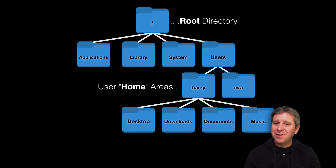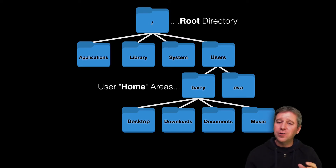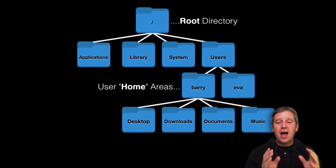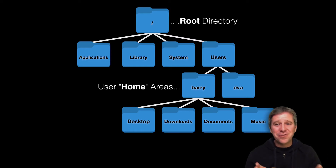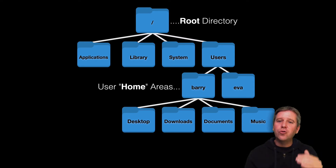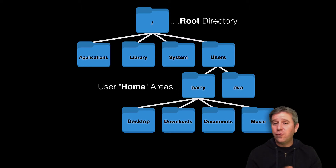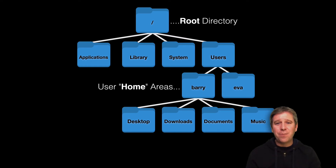Information in the UNIX file system, like every other one, is stored in files, which can be stored in directories — also known as folders for non-nerds, but we call them directories in UNIX. Directories can contain other directories or subdirectories, forming what's called a directory tree. That forward slash at the top of this tree represents the root directory of the whole file system, and it's also used to separate directory names when you type out a path.